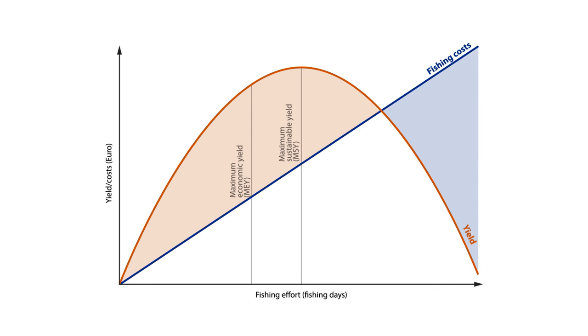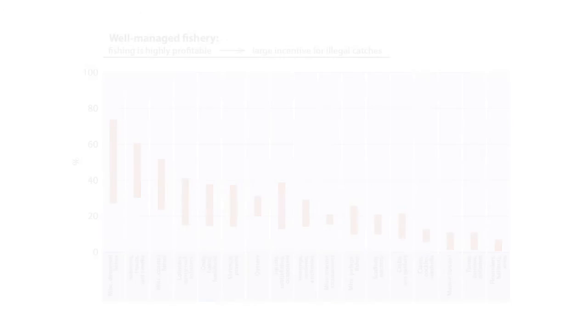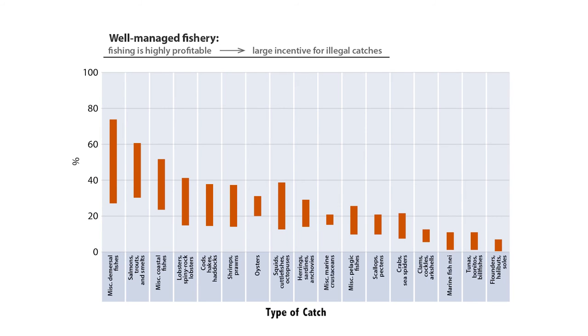But that also points to a difficulty of fisheries management. Because fishing is so profitable at these effort levels and at large stock sizes, it's very difficult to prevent people from fishing illegally. What we see globally is a large fraction of illegal and underreported fishing. The graph shows that this goes up to 50% of the declared catches for some types of fish species, and obviously more so the more valuable those fish species are.